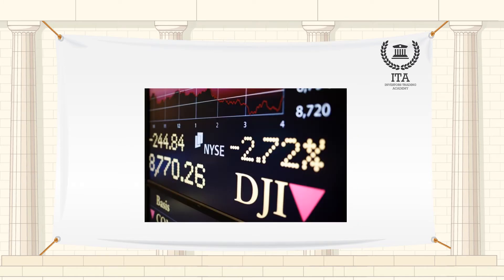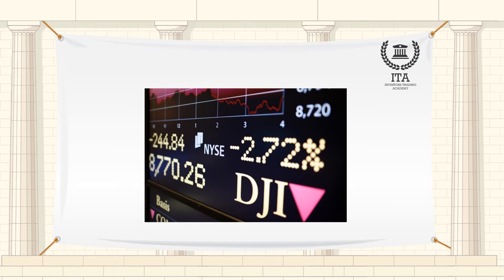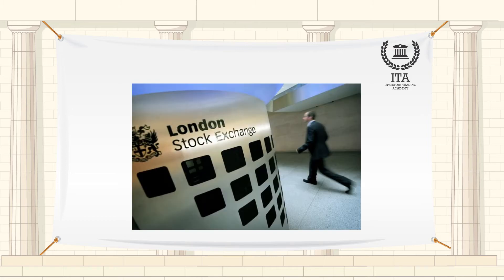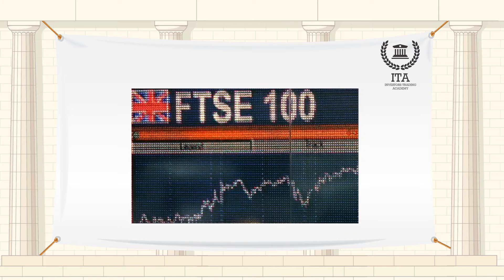An index's value is a single number that, when referenced to a starting value, describes how the index has performed over time. For example, the FTSE 100 is an index designed to track large-cap stocks. Its basket includes the stocks of the 100 largest companies on the London Stock Exchange, weighted by market cap. On August 9, 2013, its value was 6574.34.